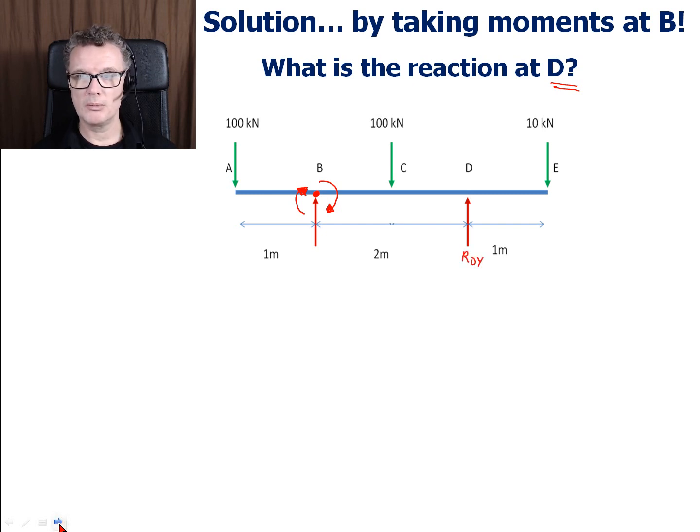That will get me my reaction point RD, because we're going to be taking moments. Moment is force times distance. The reaction force of B will be reaction force times zero, so that means that won't appear in my equation.